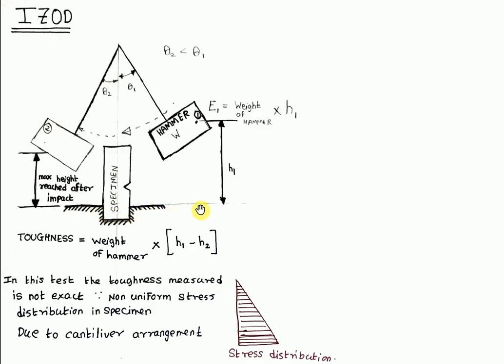Thus in this Izod test, the hammer is released from a particular height. For example, if the hammer is released from point number one, the energy of the hammer at point one can be given as the weight of the hammer times h1. And as the hammer is released, the hammer hits the specimen and specimen breaks.